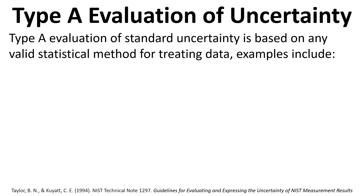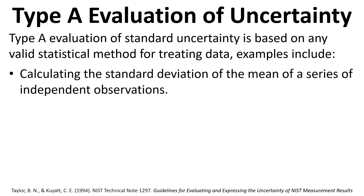For Type A we are looking at statistical methods and actually trying to process our data based on a valid statistical test. One approach could be calculating the standard deviation for the mean of a series of independent observations. We could take repeated measurements — maybe ten times — take the mean as the value and the standard deviation as the uncertainty.